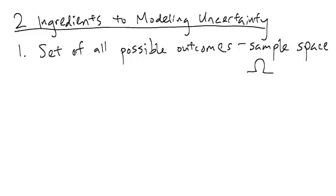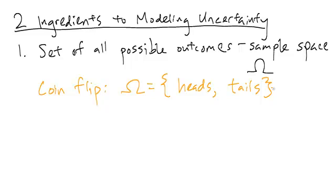Going back to our coin flipping example, the sample space in that case consisted of two items, heads and tails, because those are the only two possible outcomes to flipping a coin.